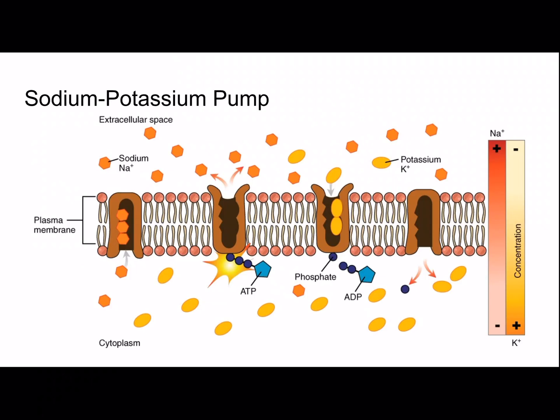The sodium-potassium pump is a great example of active transport. There's a higher concentration of sodium ions outside the cell and a higher concentration of potassium ions inside the cell, yet they are pumped against their concentration and electrical gradients. Three sodium ions are transported out of the cell as two potassium ions are transported in, and this extra sodium ion being transported out stores energy as voltage.